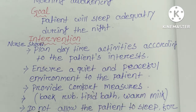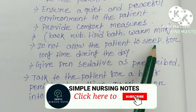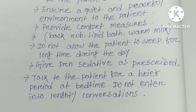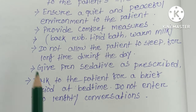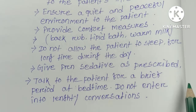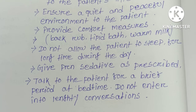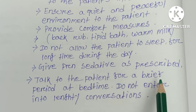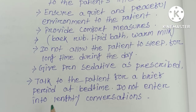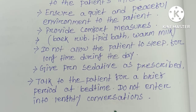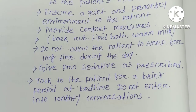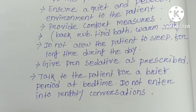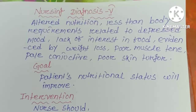The nurse should provide comfort measures like back rub, tepid bath, and warm milk. The nurse should not allow the patient to sleep for long periods during the day, as excessive daytime sleep makes nighttime sleep difficult. The nurse should give PRN sedatives as prescribed — PRN meaning 'if necessary.' The nurse should talk to the patient for a brief period at bedtime but should not enter into lengthy conversation.